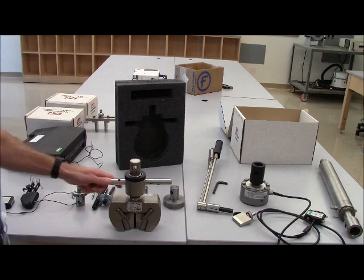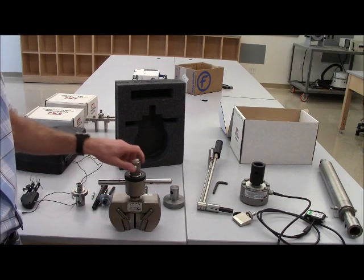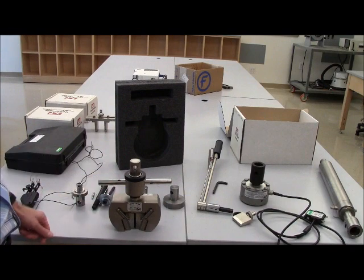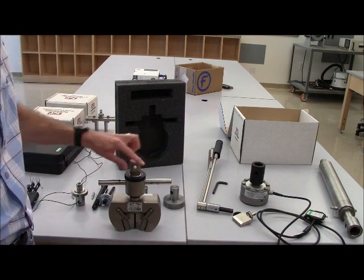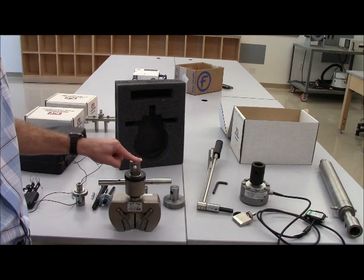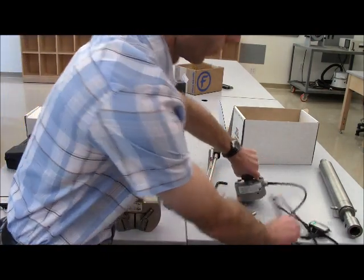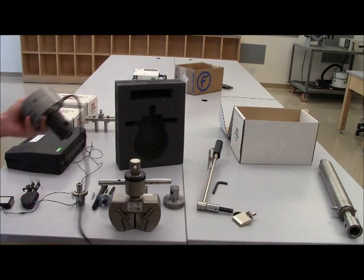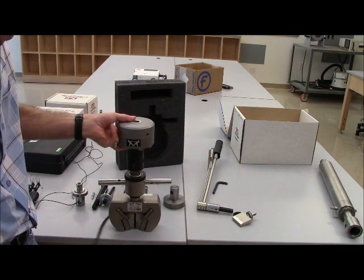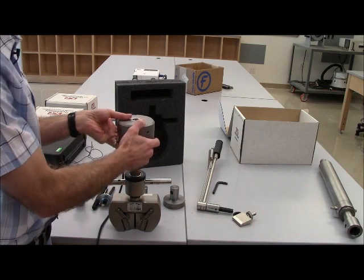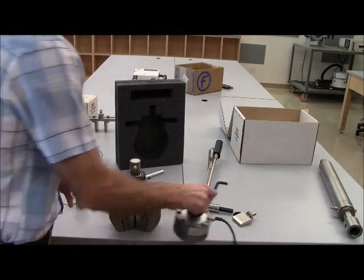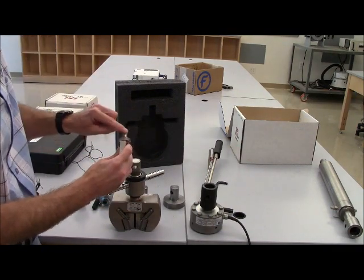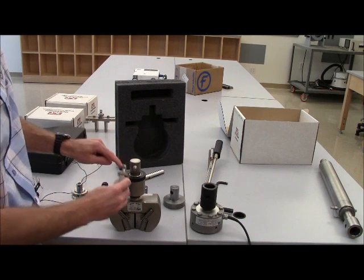While I have the wedge action grip out, I want to talk about the fact that Instron has two different interfaces between attachments and load cells. One is a large interface and one is a smaller interface. The large interface is referred to as a type DM interface, and that's Instron's labeling. So for example, the wedge grips that we have and the 50,000 newton load cell have a type DM interface, and so these fit together, and there is a half inch pin that goes through to connect them.